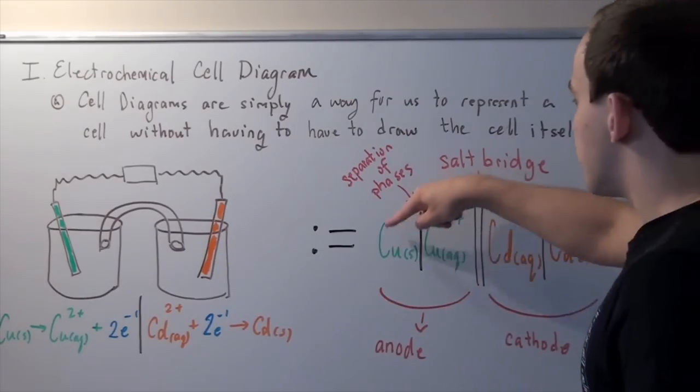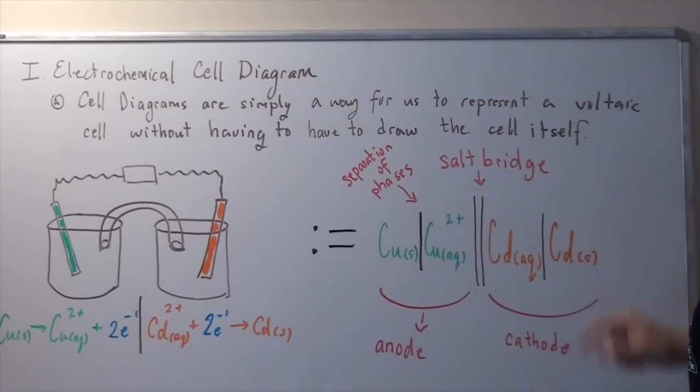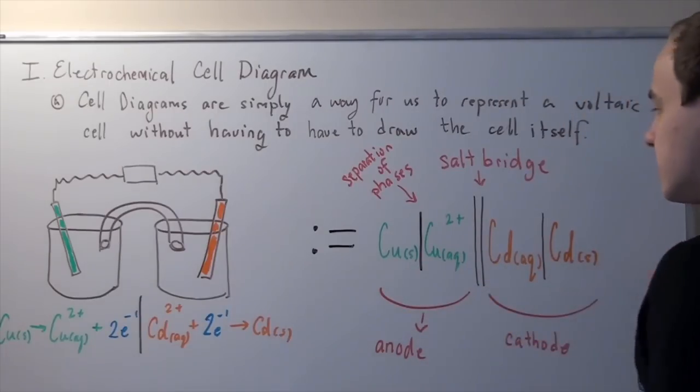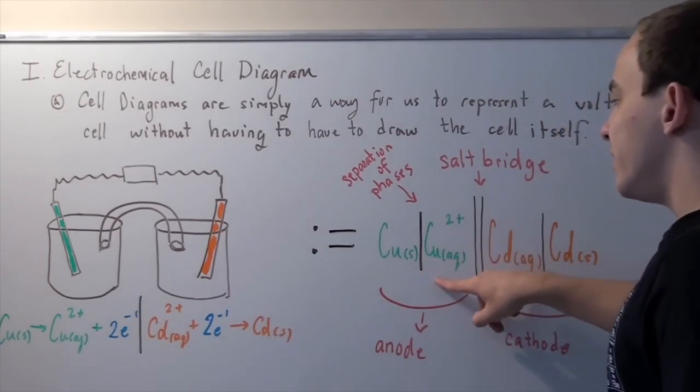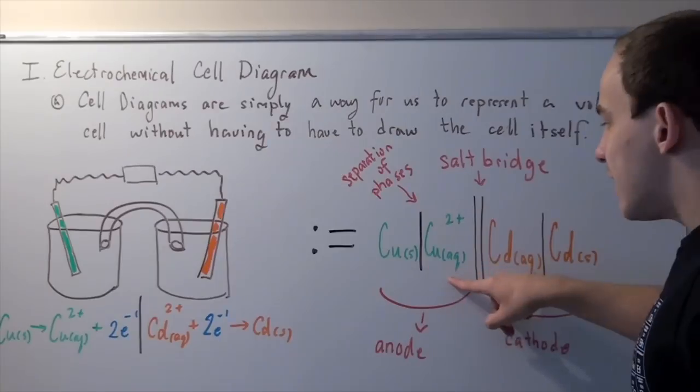Electrons travel from this side to this side. The way you read this is that copper solid is oxidized, releasing two electrons and this ion.